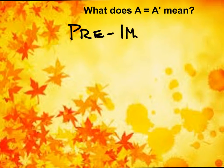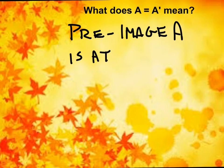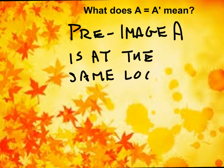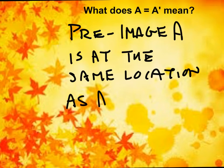the shape, in this case A, is at the same location as A prime. So the pre-image and the image both land at the exact same location.